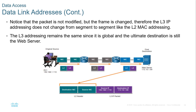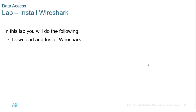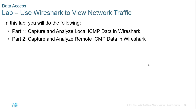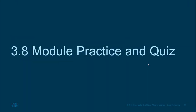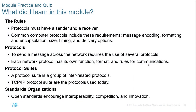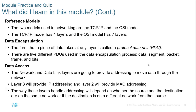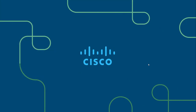We will have a lab for installing Wireshark and a lab analyzing local and remote ICMP data traffic using Wireshark. In this lesson we learned about the rules, protocols, suites, basic standards organizations, the reference models, data encapsulation, and data access. The two big takeaways are the reference model and the PDUs — those are the two things we need to understand. That is this chapter in a nutshell.